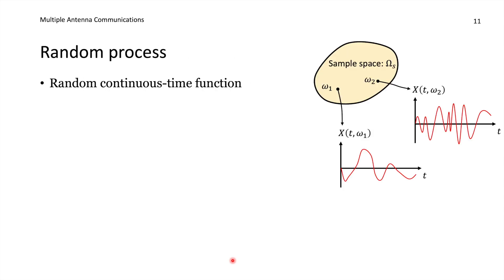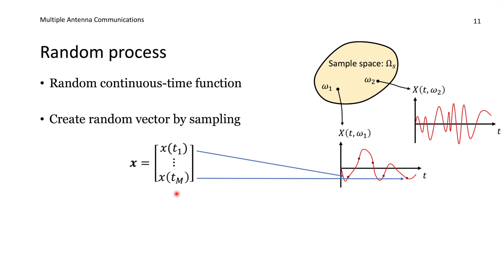Finally, we consider random processes — random continuous-time functions. This is an extension from scalars to vectors to entire continuous-time functions: every realization is a whole function of time. Different realizations share statistical properties because they come from the same sample space. Random processes naturally appear when we take samples of them to obtain random vectors. The mean value may depend on the sampling time, and the covariance between samples at two different times may also depend on those time values.